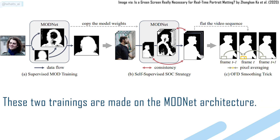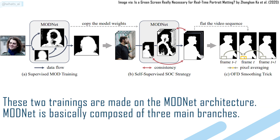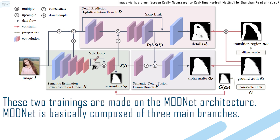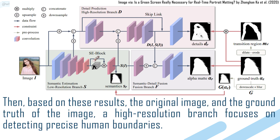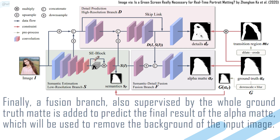These two trainings are made on the ModNet architecture. ModNet is composed of three main branches. There is a low-resolution branch, which estimates the human semantics. Then, based on these results, the original image, and the ground truth, a high-resolution branch focuses on detecting precise human boundaries. Finally, a fusion branch — also supervised by the whole ground truth mat — is added to predict the final alpha mat, which will be used to remove the background of the input image.